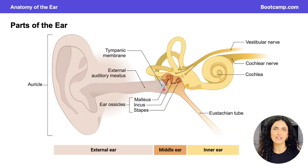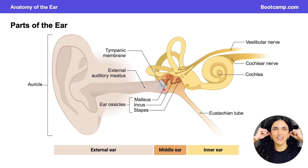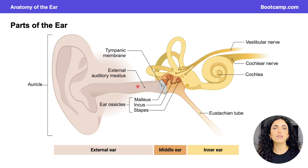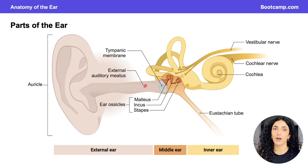Before we get into all the structures of the external ear, I want us to be familiar with the three parts of the ear. Starting laterally and working our way medially, you're going to see two structures sitting along the lateral sides of your head — that structure is considered the auricle. The auricle is the first structure making up the external ear and is responsible for funneling sound waves from the external environment into the external acoustic meatus.